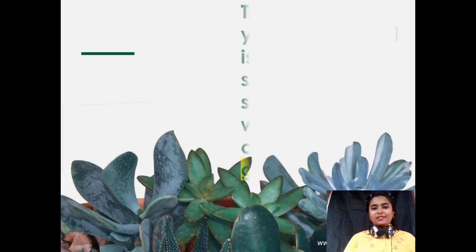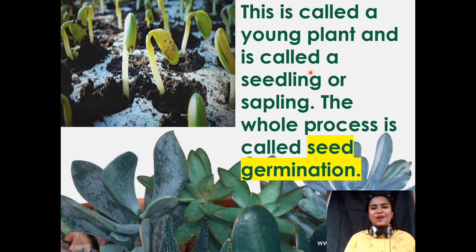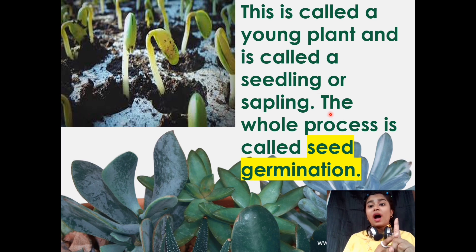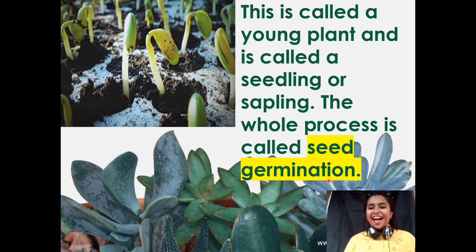This young plant is also called a seedling or sapling. As you can see in this picture, there are many young plants which have just sprouted from the seed. The whole process from step one to step eight is known as seed germination — it is the coming out of the baby plant from a small seed.